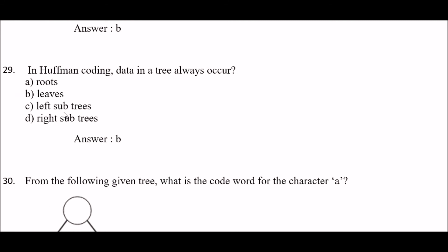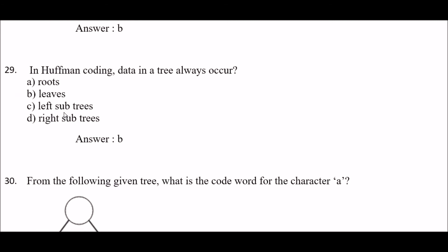Next question: in Huffman coding, data in a tree always occur at — option A: roots, option B: leaves, option C: left subtrees, option D: right subtrees. The right answer is option B — leaves.